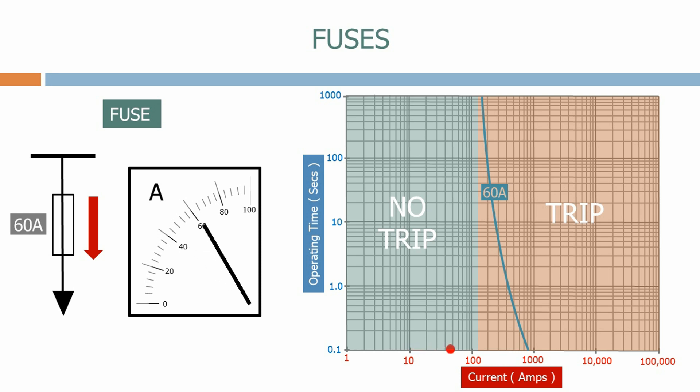Let's now see what happens if we apply a fault to the feeder. This time the current increases substantially. At this magnitude of current, the fuse operates virtually instantaneously. The wire inside the fuse melts, disconnecting the supply to the load.